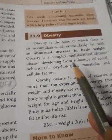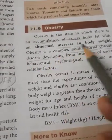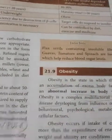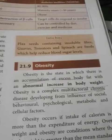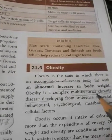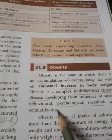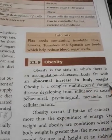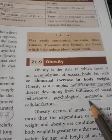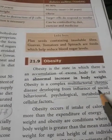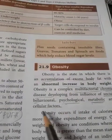Obesity may develop due to so many factors, that's why it is called a multifactorial and chronic disease. A chronic disease is one that develops gradually, not suddenly. Obesity develops from social, behavioral, psychological, metabolic, and cellular factors — so many factors are responsible for developing this non-communicable disease.